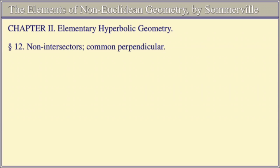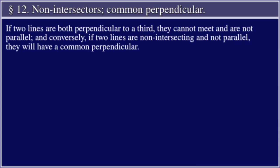Non-Intersectors: Common Perpendiculars. If two lines are both perpendicular to a third, they cannot meet and are not parallel. And conversely, if two lines are non-intersecting and not parallel, they will have a common perpendicular.